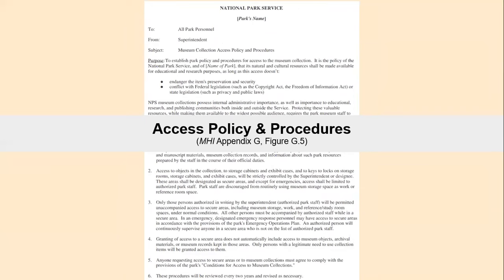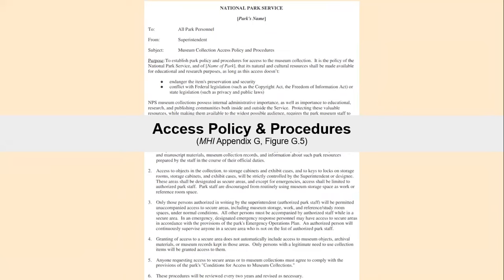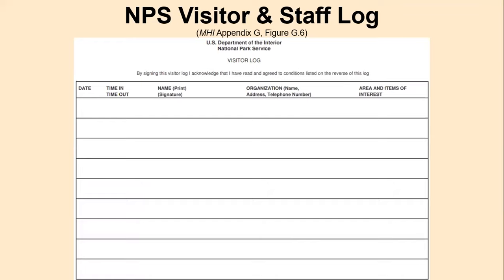In addition, we also have a sample access policy and procedures also located in Appendix G. If you do not have written access policies at your museum, you should feel absolutely free to use this document as a baseline. Another document you might find useful in Appendix G is our visitor and staff log. I'm sure your institution uses something like this to document who's looked at which objects, when they got there, when they left, and where they're from — whether it's visitors who sign in at your front desk or interns who sign in whenever they enter a locked storage room. It is useful for both visitors and staff to use this log.